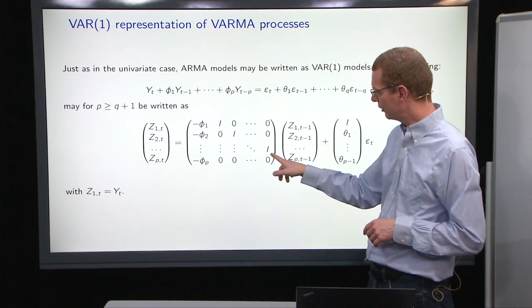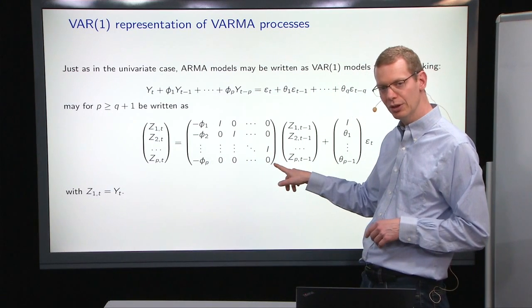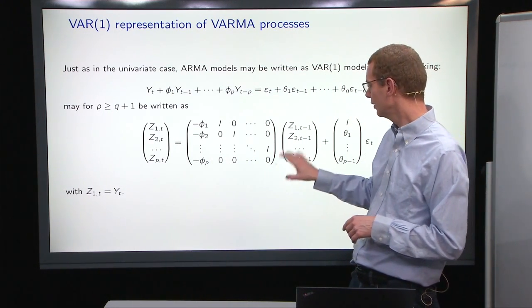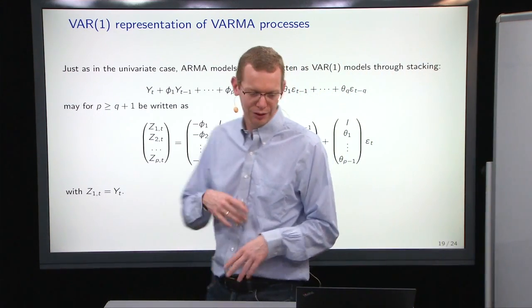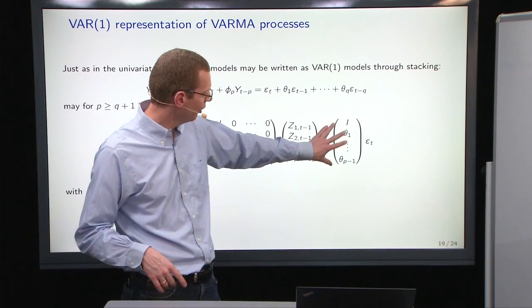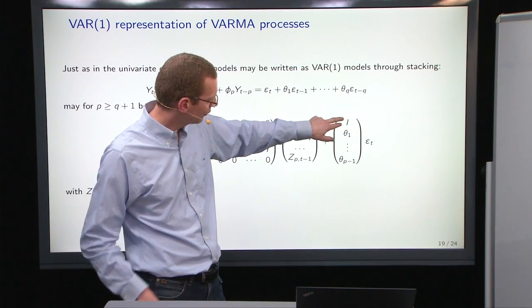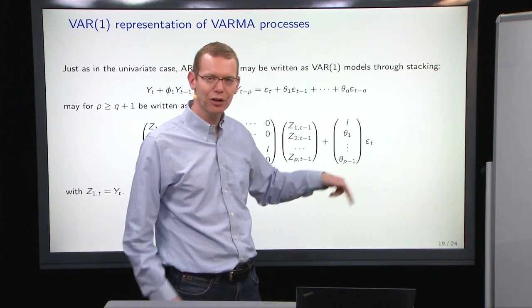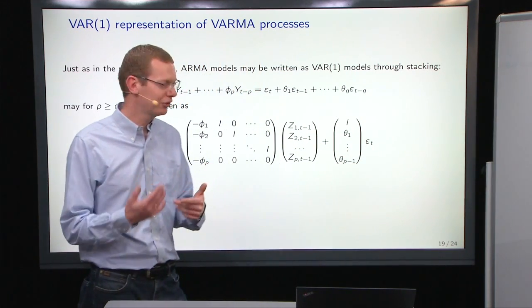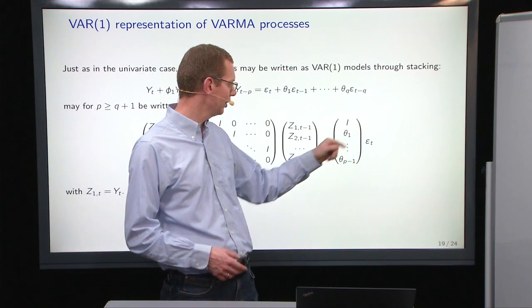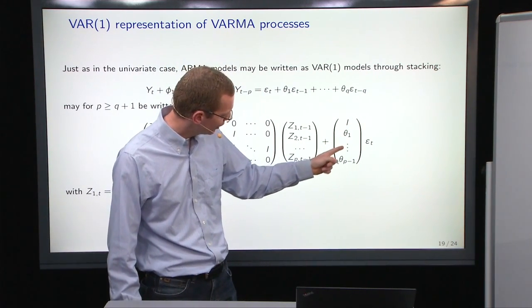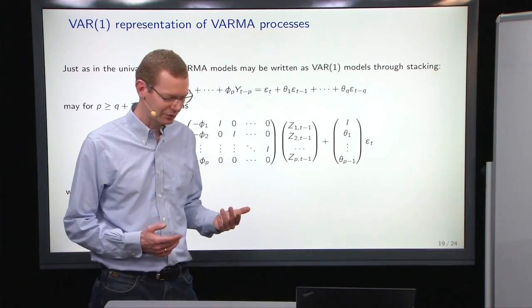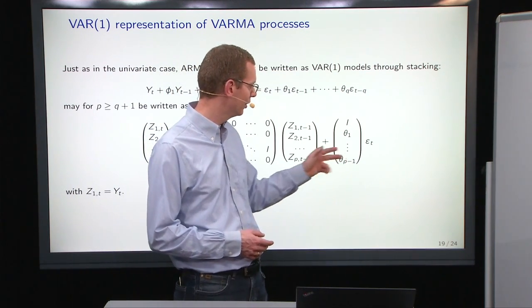Then you have an identity matrix with a row of zeros below, here, and then you have the state here. We'll get back to the understanding of that. And then the noise part here, you start with an identity matrix to get epsilon t. This corresponds, in the multivariate setting, to have a leading term of unity up here. And then you have the lagged epsilons that you want to keep in here.